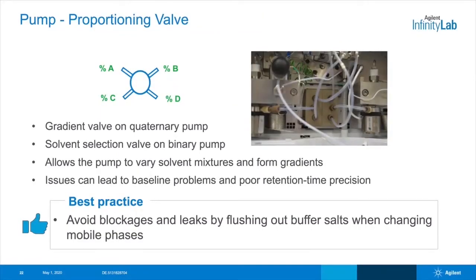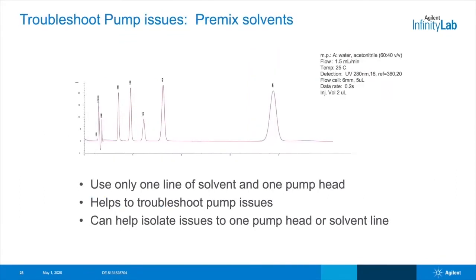Certain types of pumps, which we call quaternary pumps, will have a multi-channel gradient proportioning valve. Binary pumps will have what we call a solvent selection valve. Both valves allow the pump to vary solvent mixtures and form gradients. Take good care of this valve by avoiding blockages and leaks by flushing out buffer salts when changing mobile phases. With any pump issue, it may be helpful to pre-mix solvents to test an isocratic separation. This can help troubleshoot whether the issue is with only one solvent line, maybe in the degasser or going into the proportioning valve, and can help identify whether a pump issue is related to one pump head over another if you have a binary pump.